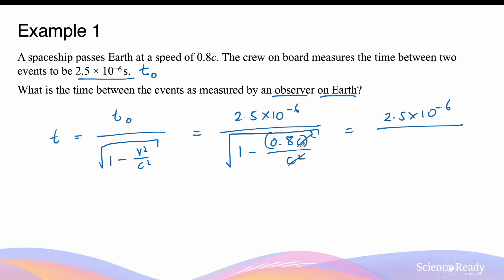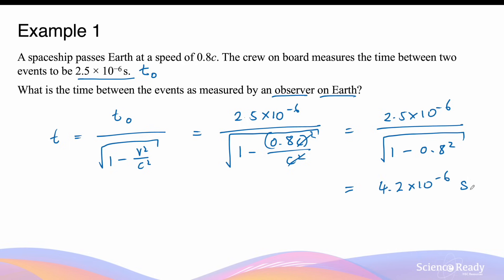Don't forget that although the c squared and c squared cancel out, the square still applies to the 0.8. So we have 1 minus 0.8 squared inside the square root left over in the denominator. Entering this expression into a calculator gives the final answer of 4.2 times 10 to the minus 6 seconds.